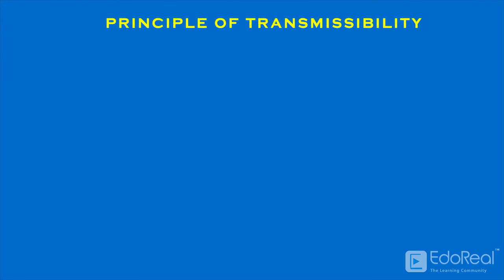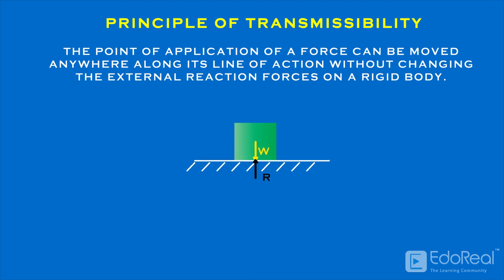Principle of transmissibility. The principle of transmissibility states that the point of application of a force can be moved anywhere along its line of action without changing the external reaction forces on a rigid body.